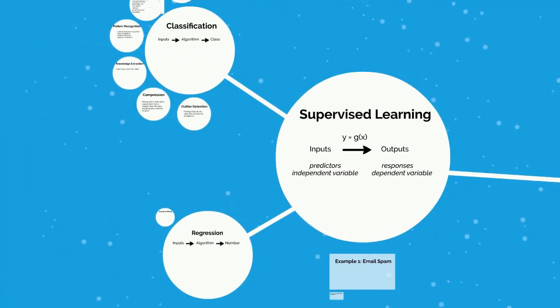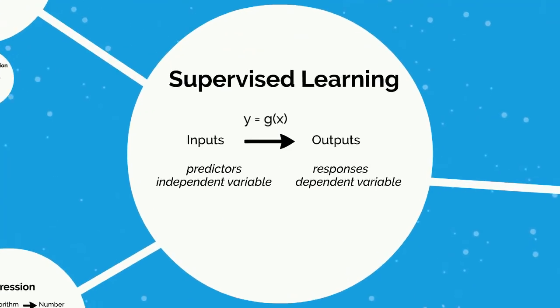Our first type is supervised learning. In supervised learning, you're going to have inputs and outputs, and you're going to have an algorithm that transforms your inputs to your outputs. The inputs are often called predictors or the independent variable, where the outputs are going to be your responses or dependent variable.